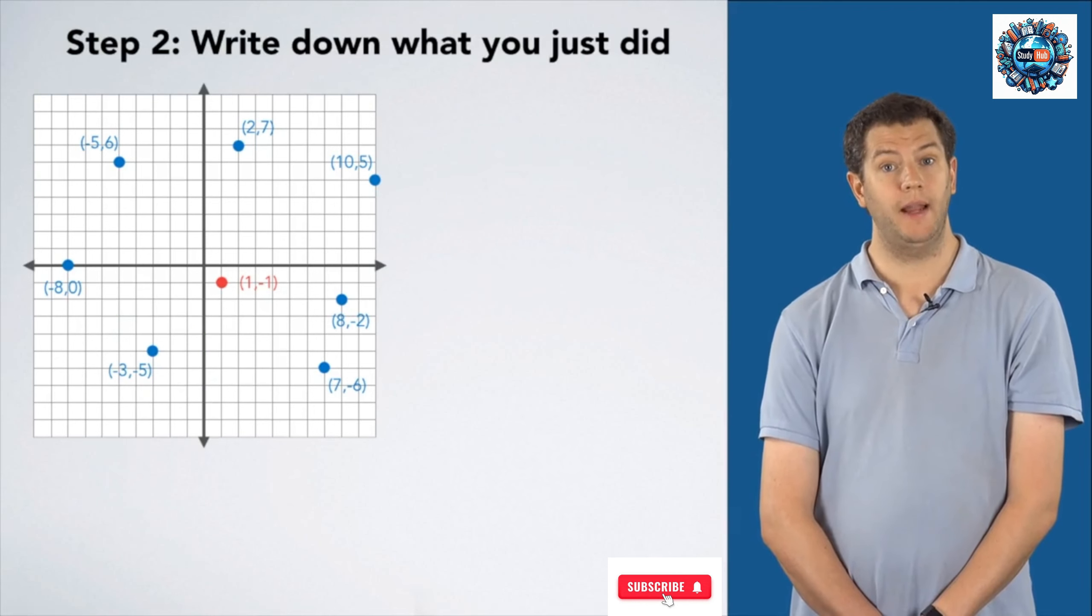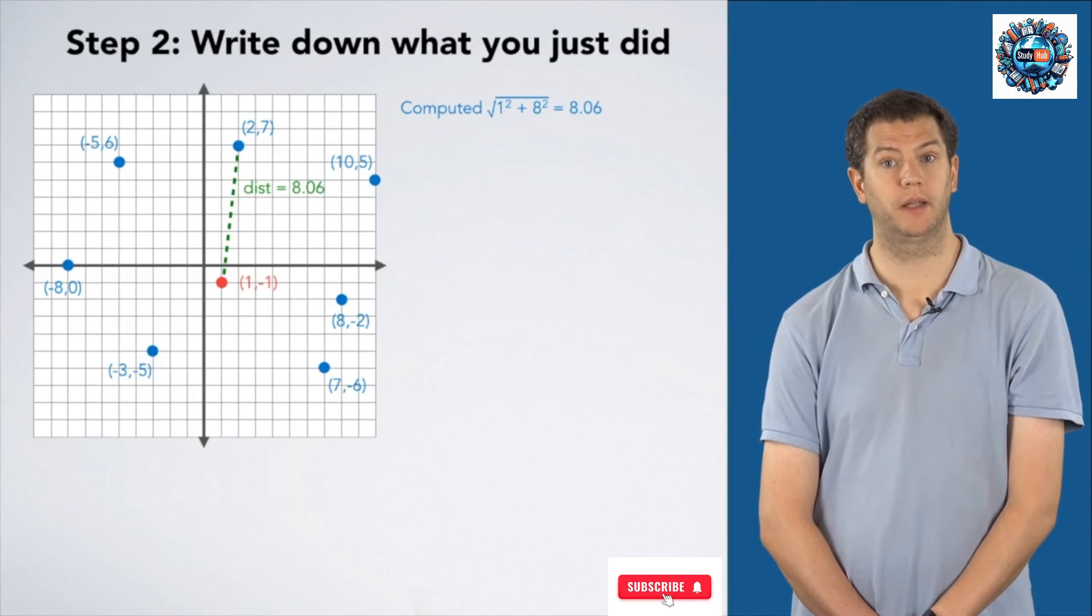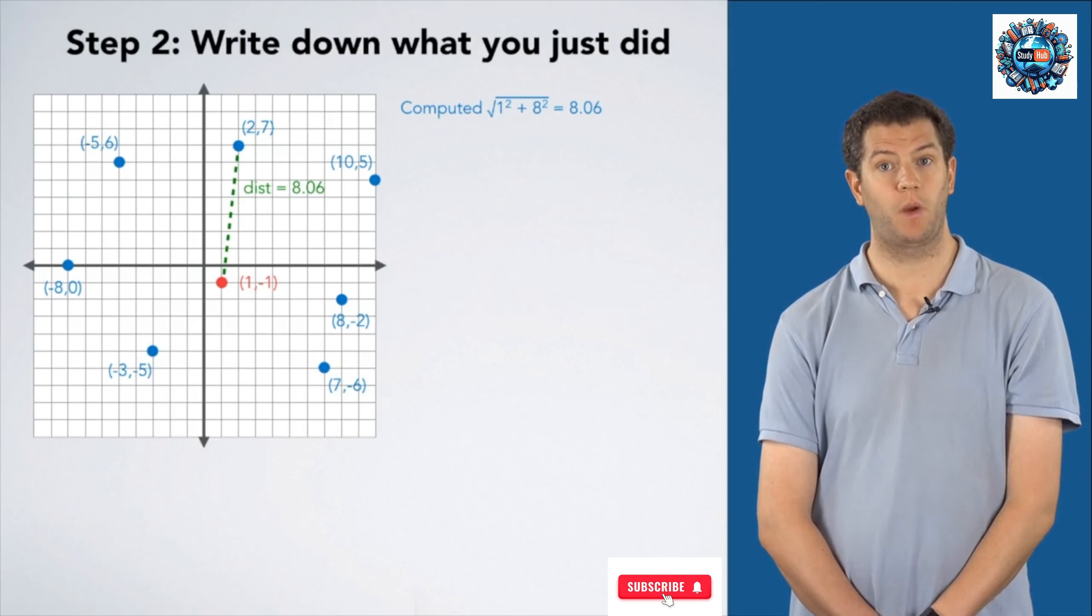Now, I write down exactly what I just did. I computed 1² + 8², took the square root, and got about 8.06.